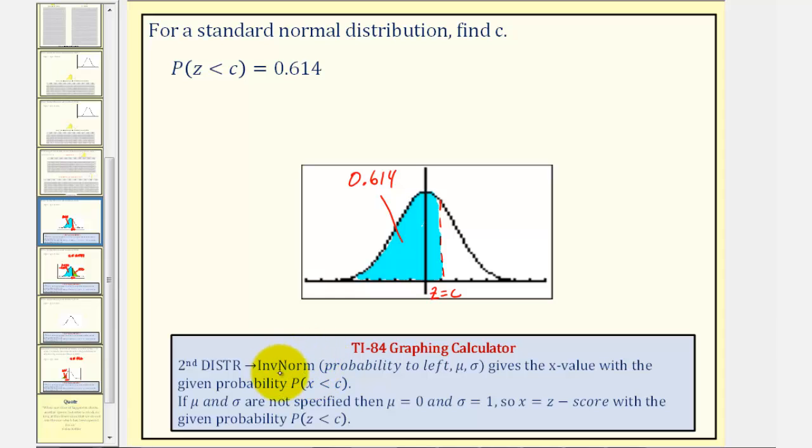Normally when using the inverse norm feature, we enter the probability to the left, the mean, and the standard deviation. But in our case, since we're working with the standard normal distribution and we're looking for a Z-score, we can leave off mu and sigma. When we leave these off, mu equals zero and sigma equals one, which are the correct values for the standard normal distribution.